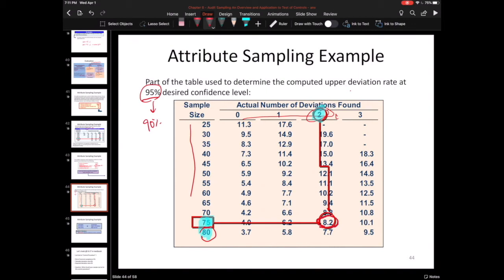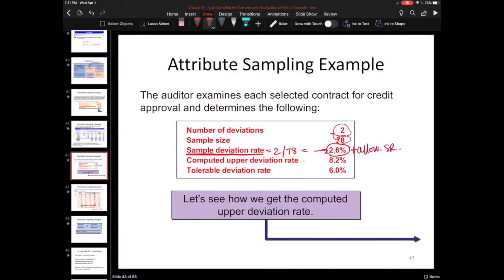And the reason why you always round down is because rounding down results in the most conservative upper deviation rate here. If I rounded up to 80, I would get a lower number here. And remember, this number that you're finding in this table represents your upper deviation rate, which I told you represents your, quote unquote, worst case scenario. So this is the ultimate conservative estimate. So for my ultimate conservative estimate of the possible worst case error rate, it does not make sense for me to round up to get to a smaller number. I want to be conservative, want to round down and get the bigger number. So I get my 8.2, and that's where this is coming from.